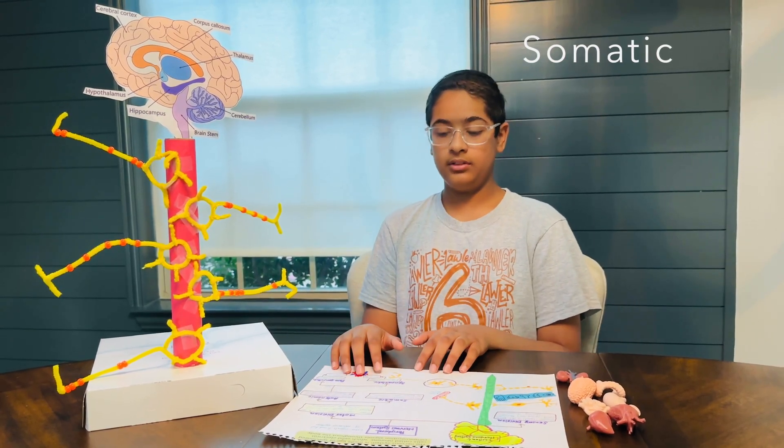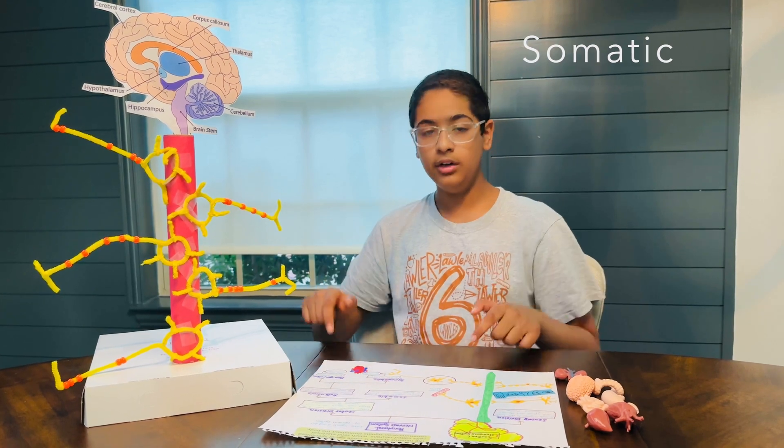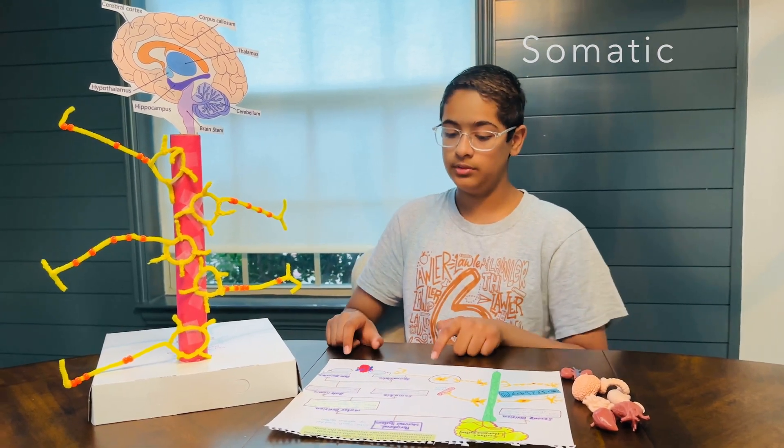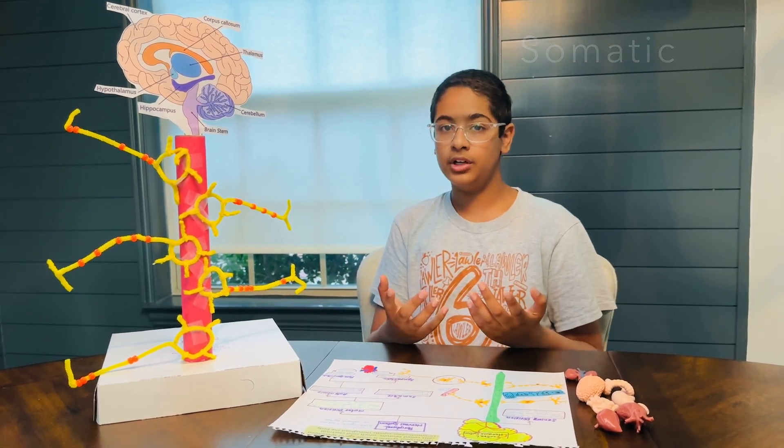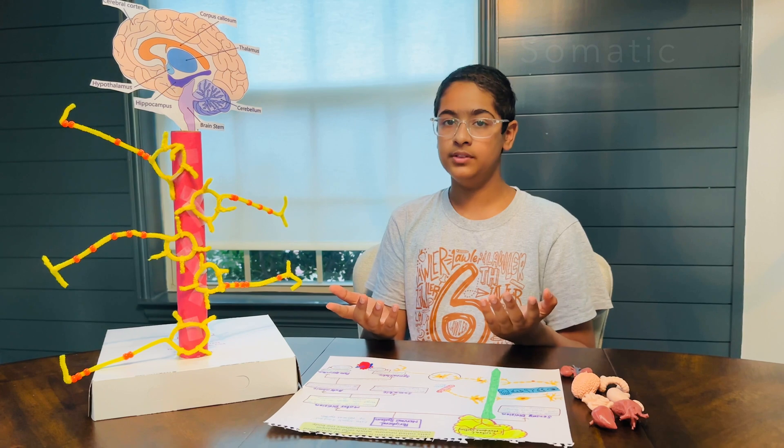The autonomic nervous system can be split into two other types of nervous systems, that being the sympathetic and parasympathetic. Also, we have no control over these kinds of nervous systems.